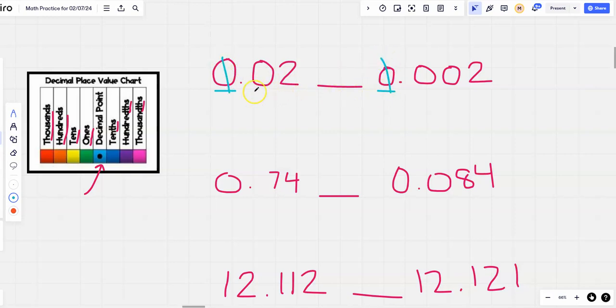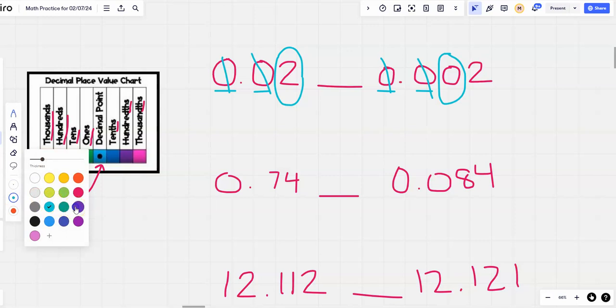Next number, we have a zero in the tenths and a zero in the tenths. Nope, can't compare that number either. So now we have a two in the hundredths and a zero in the hundredths for this one. This is the number we are going to compare. We know two is greater than zero, so our mouth is open to the greater number. So two hundredths is greater than two thousandths. See how that works? All right, next one.